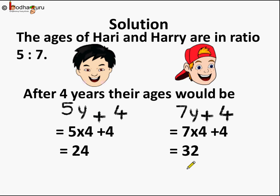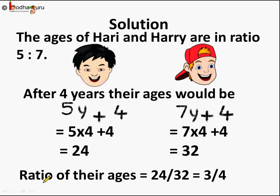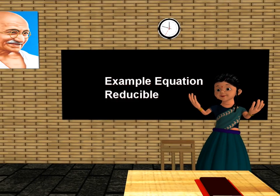Now lastly, let's verify. The problem said the ratio of their ages would become 3 by 4 after 4 years. The ratio of their ages after 4 years is 24 by 32. Since 8 threes are 24 and 8 fours are 32, this reduces to 3 by 4 — which is exactly what was given in the problem. This proves the answer: y is equal to 4, and their present ages are 20 and 28. That's all for now. Bye bye children.